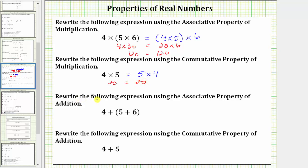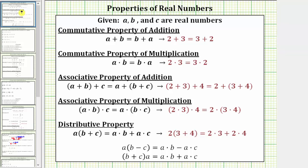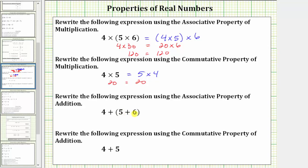Next, we are asked to rewrite the following expression using the associative property of addition. We are given the expression four plus the quantity five plus six. The associative property of addition is the quantity A plus B plus C equals A plus the quantity B plus C. It involves changing the grouping in a sum. For the given expression, we have grouping symbols or parentheses around the five plus six. Applying the associative property of addition, this is equal to the quantity four plus five plus six. Notice now the grouping symbols or parentheses are around the sum four plus five.